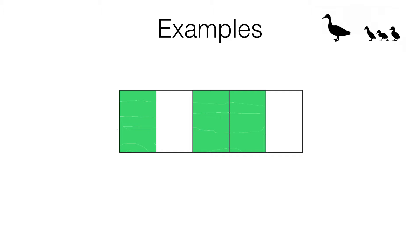Here's a quick recap question for you. I've got a large rectangle. It's split into five equal parts. What fraction is shaded green?